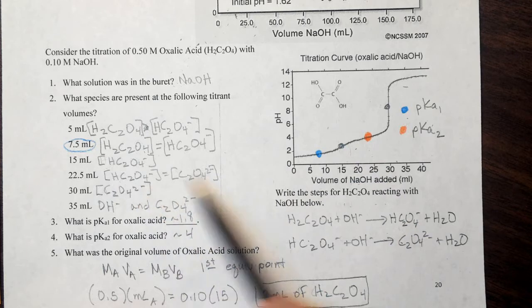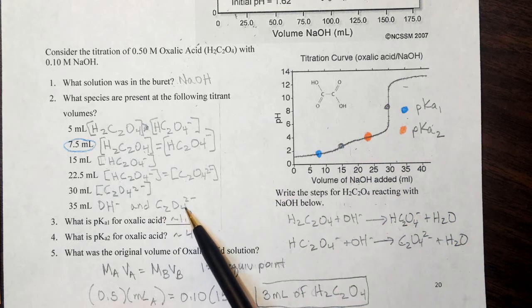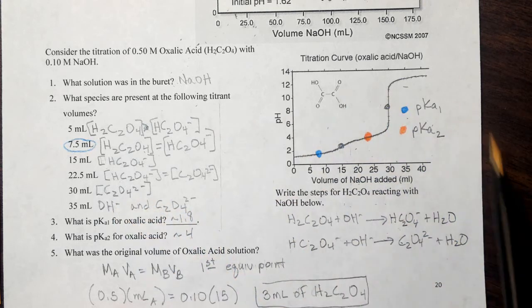30 mLs, about all I have left is the oxalate ion. And then at 35 mLs, I have the same quantity of the oxalate ion, but I also now have excess hydroxide.